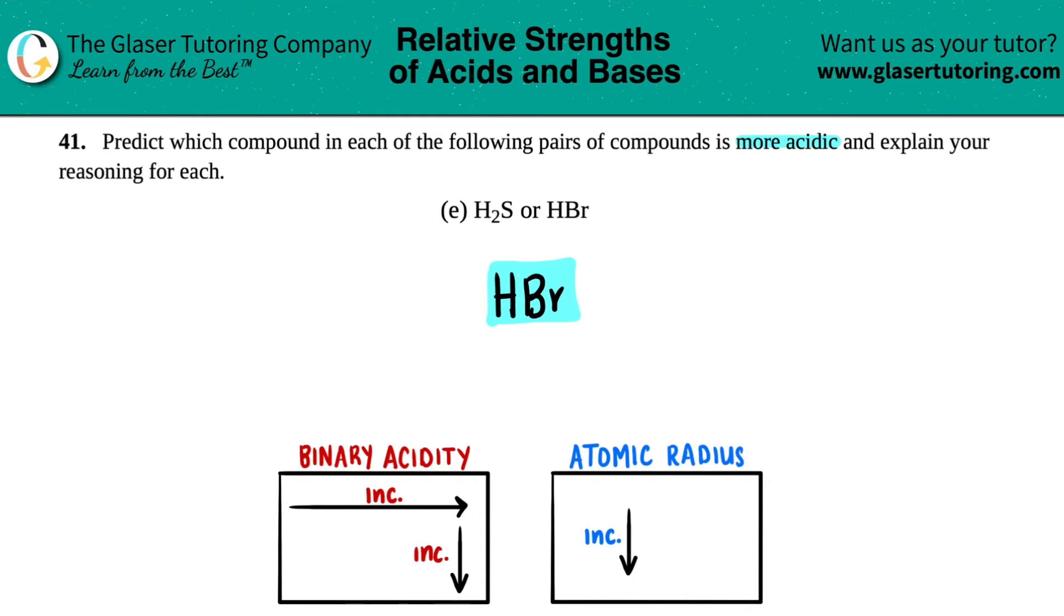We could also figure this out by doing the binary acid trend. Remember binary acids is when you just have a hydrogen and then you have another element next door. So you're only allowed two elements and one has to be a hydrogen. And that's what's going on here. You have a hydrogen and a sulfur, two elements, hydrogen and a bromine, two elements. So we're talking about binary acids. Binary acid trend increases as you go across a period and down the group. It also increases. So increase, increase.